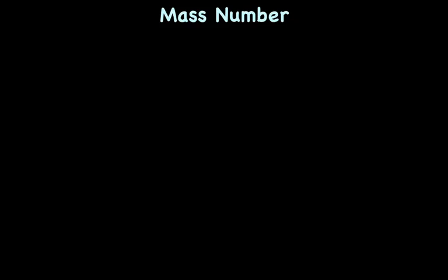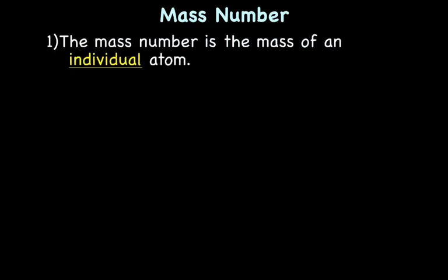Let's start by talking about the mass number. When we're discussing mass number, remember mass is basically how much something weighs. The mass number refers to the mass of an individual atom — that's really important. So when we talk about the mass number of hydrogen, we're talking about the mass of one hydrogen atom, not all the different hydrogen atoms. The mass number is the mass of one individual atom: one hydrogen, one carbon, one oxygen, whatever.